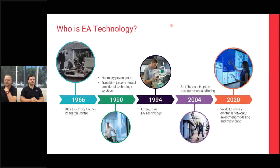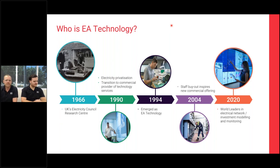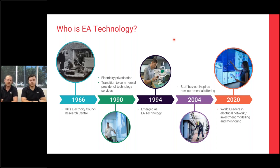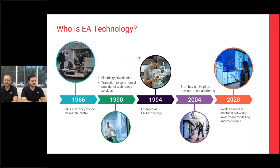A little bit about who EA Technology is. Back in the 60s, EA Technology was the Electricity Council Research Centre for the UK. There were six different power companies in the UK and we were the research division for those companies, funded by all the power companies. We did a heap of research and development into making the power companies run more economically, preventing failures, assisting with standard writing. Through to the nineties, we became privatized as a proper private company and from there the company was taken worldwide.